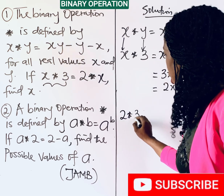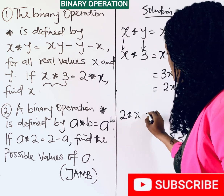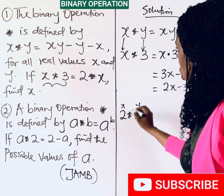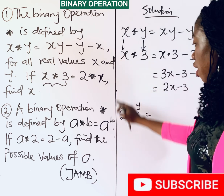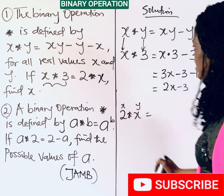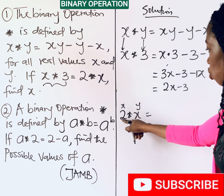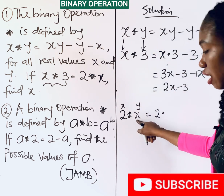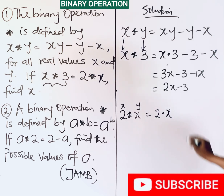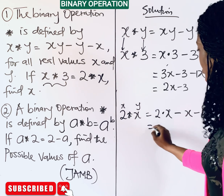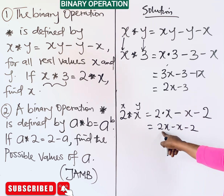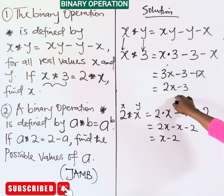Now let's work out 2 operation x. Here, the first value is your x and the second is your y, so x becomes 2 and y becomes x. Substituting: 2 times x, minus x, minus 2. Simplifying: 2x minus x minus 2 gives us x minus 2.